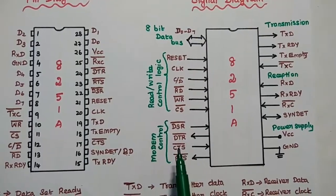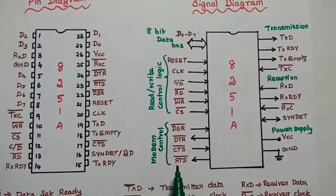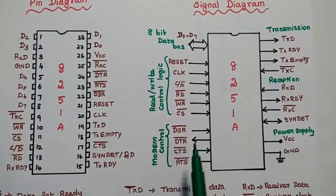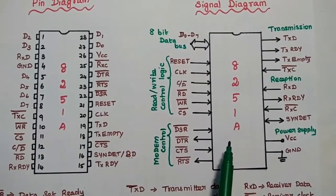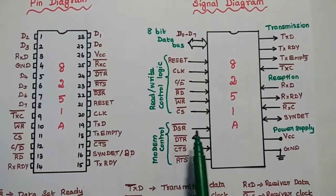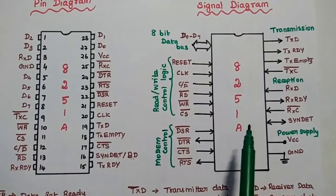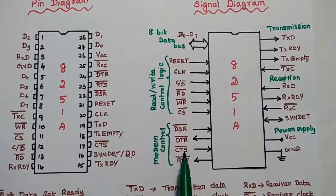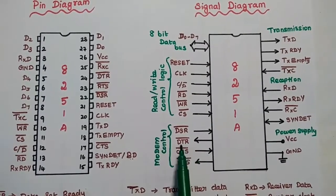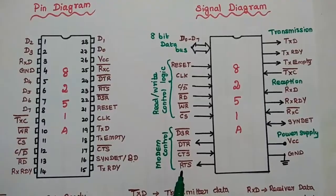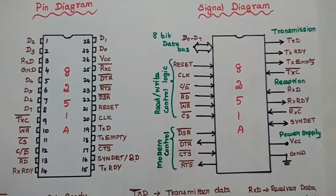The modem-related signals are DSR, DTR, CTS, and RTS. DSR and CTS are input signals to the 8251A. DSR means data set ready, indicating that data is ready to the device. CTS means clear to send the data. DTR (data terminal ready) and RTS (request to send) are output signals from the device.